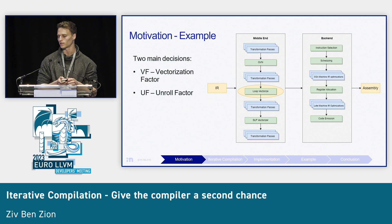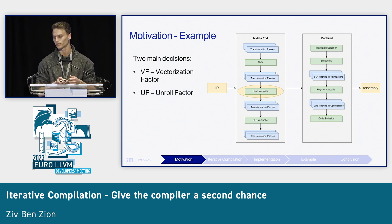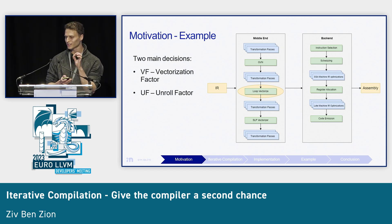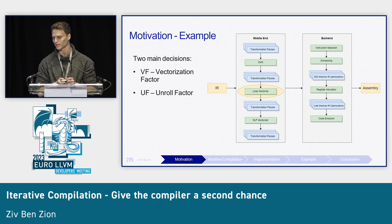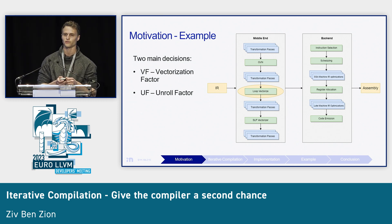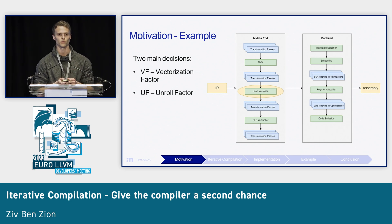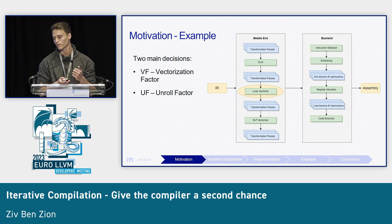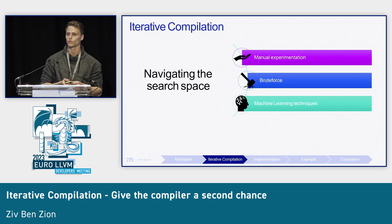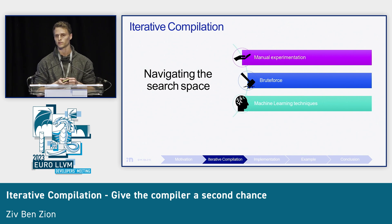Moving on to the loop vectorizer itself, it has two main decisions to make: choosing the best vectorization factor (VF) and the best unroll factor (UF). An aggressive VF or UF can and probably will eventually lead to very high register pressure. So what we would like to do is try several options, and this is the process of iterative compilation.